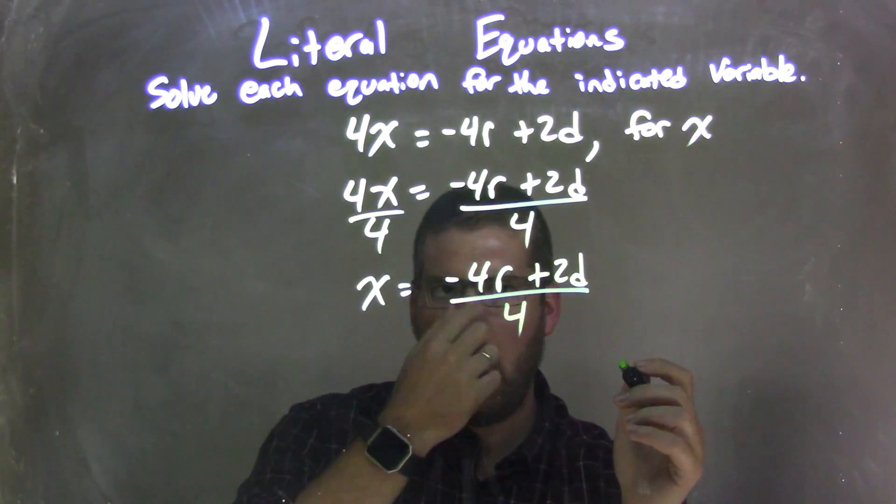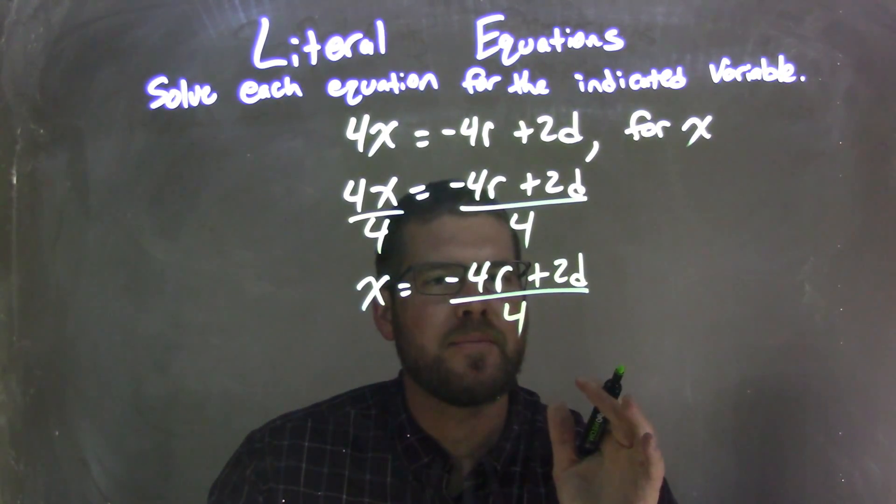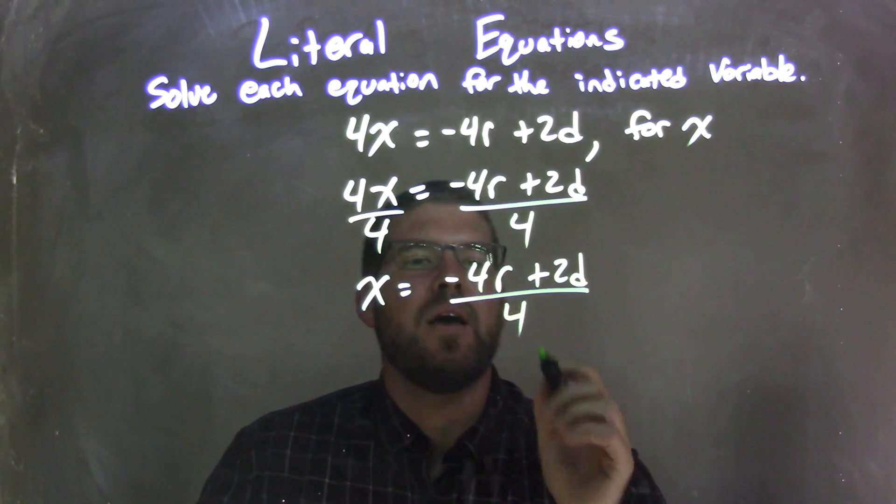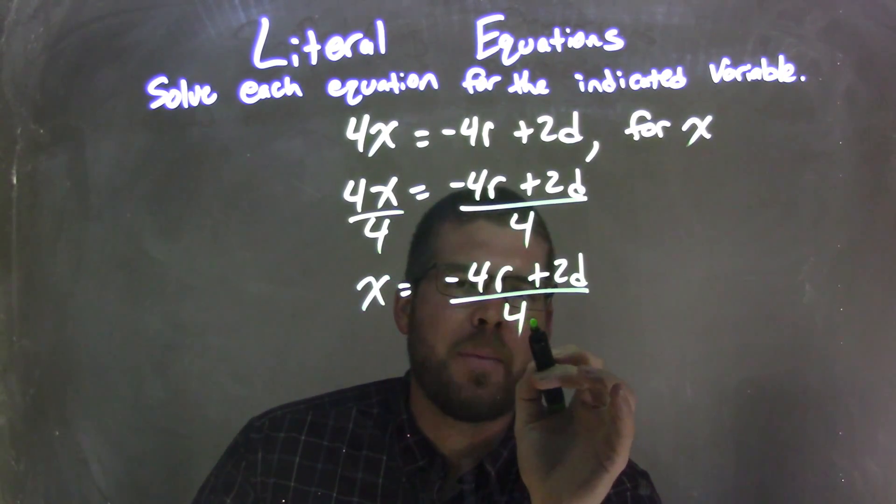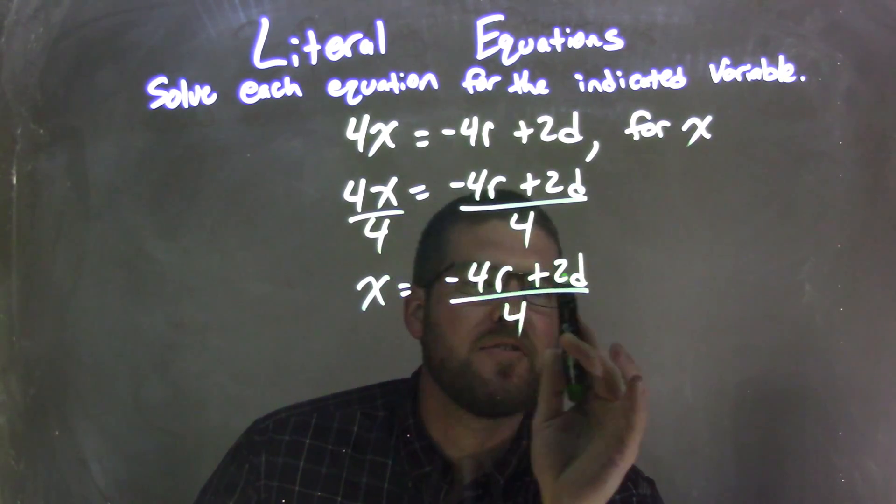Now one thing we need to think about is, is there a way we can simplify this? And yes, there is. I see there's a 4 in the denominator, and that's an even number, and there's two even numbers up here.